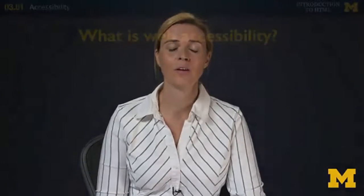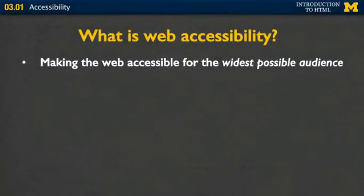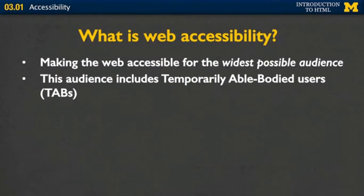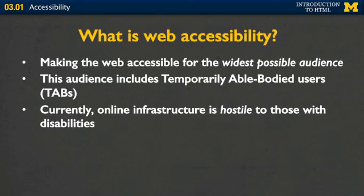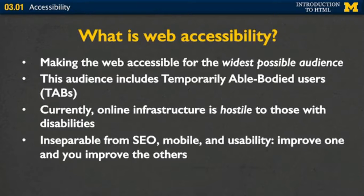So let's review. What is web accessibility? It is making sure that you're making your web accessible for the widest possible audience. This includes people with permanent disabilities and those with temporary disabilities. Currently, the online infrastructure, while a wonderful resource, is hostile to those with disabilities. Another issue to think about is that accessibility is inseparable from search engine optimization, mobile technology, and usability. Improve one of these things and you can improve all the others.